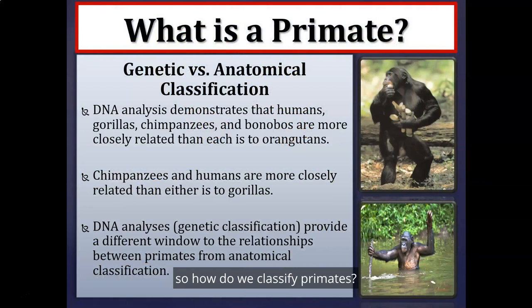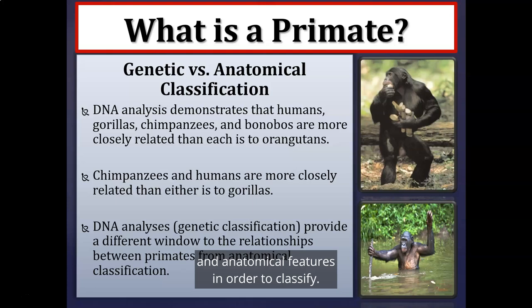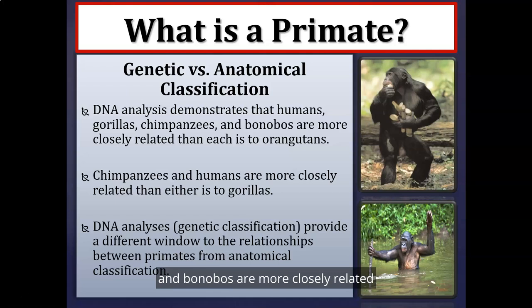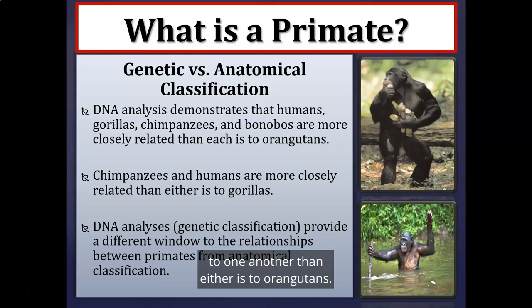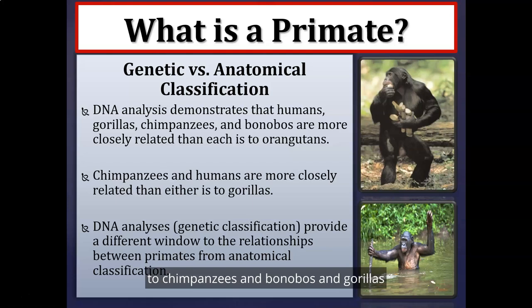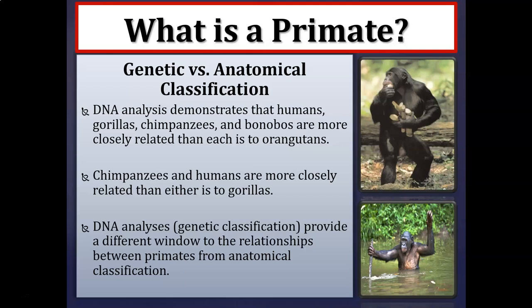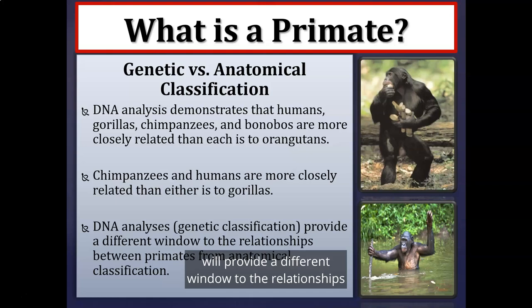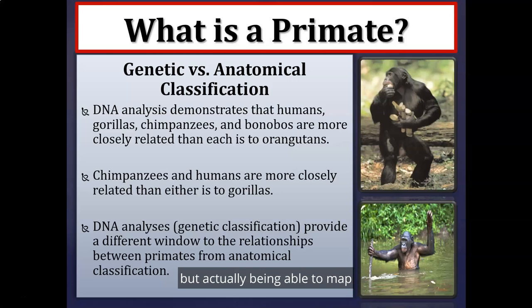How do we classify primates? Primatologists look at both genetic and anatomical features. DNA analysis shows that humans, gorillas, chimpanzees, and bonobos are more closely related to one another than any of them are to orangutans. Chimpanzees and humans are more closely related to each other than either is to a gorilla. Genetic classification provides a different window into primate relationships than anatomical classification alone.